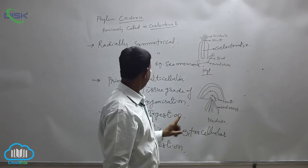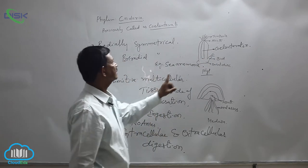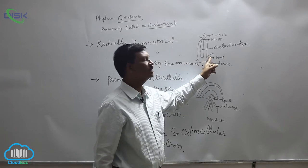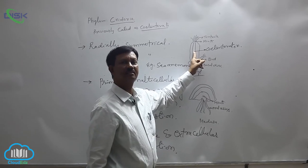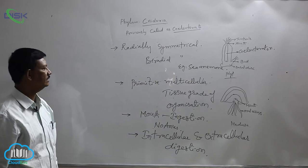The cells, especially in the endodermis or gastrodermis, some cells secrete the digestive enzymes. These digestive enzymes are poured into the coelenteron where food is digested. These are the two types of digestion present in this phylum.